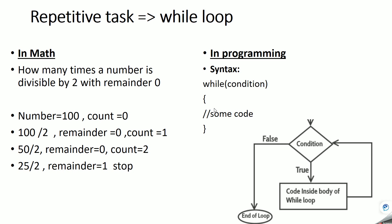If the condition is true, the code written inside the braces gets executed. After executing that code, the control comes back to the condition and it is checked again. If the condition is again true, the code executes again. Once the condition becomes false, the loop ends.